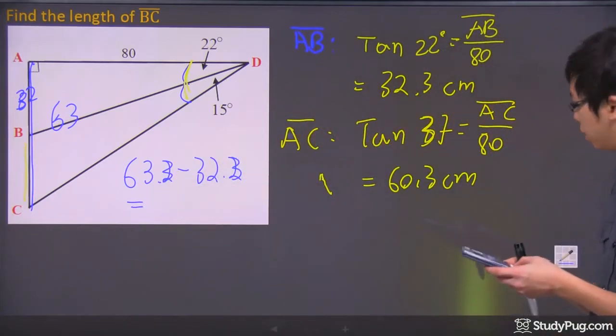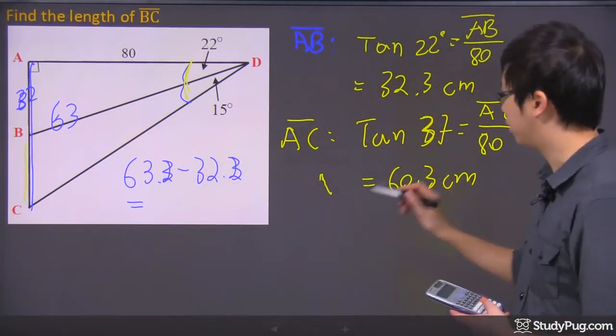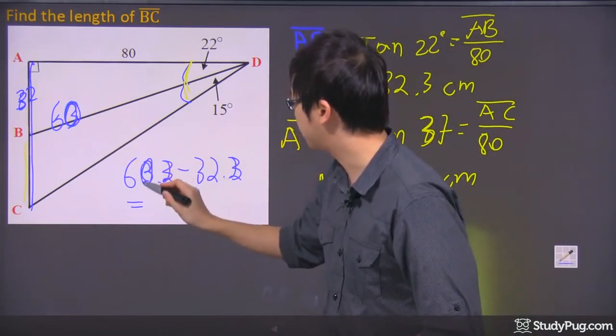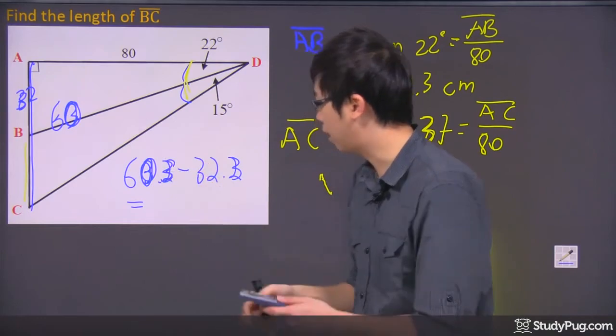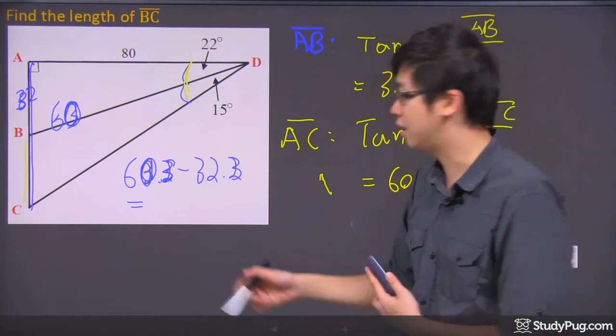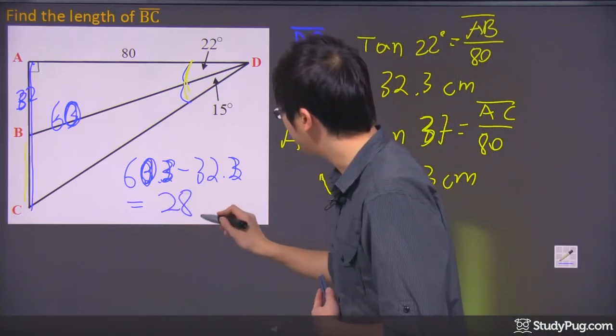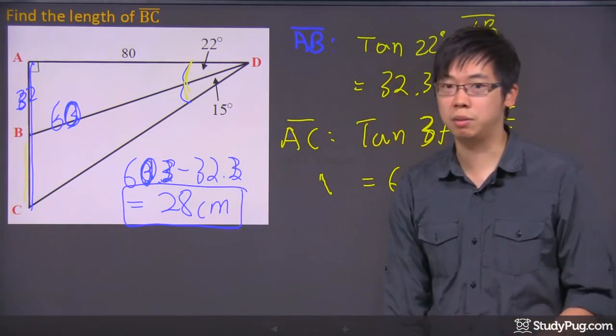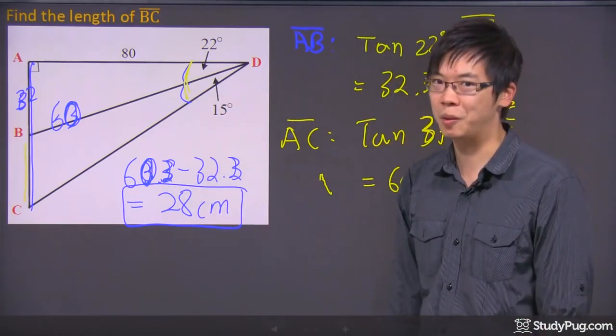The all 0.3s, right? So 3 and 3s are gone, 63. Oh, it's actually 60. I'm really sorry, all those mistakes right here. So this is actually 60.3. So 60.3 minus the 32.3, I got myself 28. Sorry about those scribbles. The final answer should be just 28 centimeter, if that was centimeter. Thanks a lot.